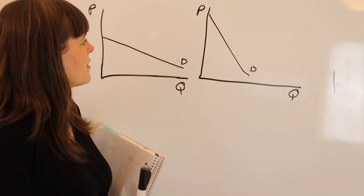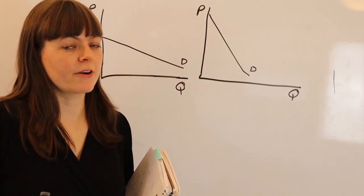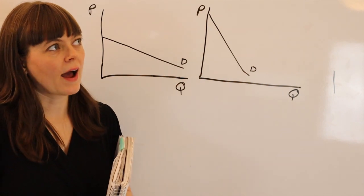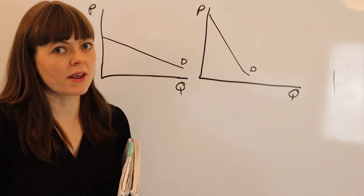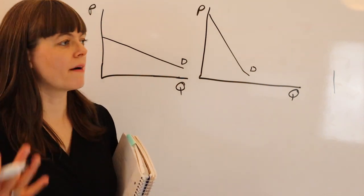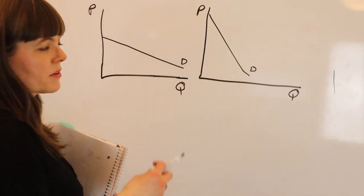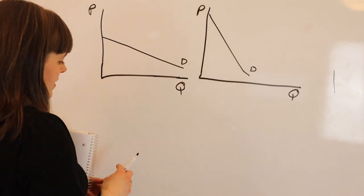When it comes to the monopoly model, the elasticity of demand matters a lot in terms of how much a particular firm can raise the price or mark price above marginal cost. So let's look at why that is graphically.